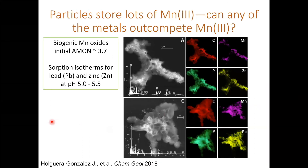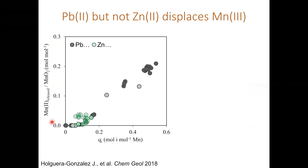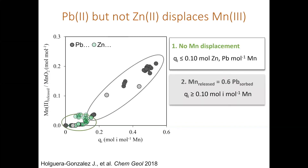We have also looked at the adsorption of metals like lead and zinc on biogenic manganese oxides. These EDX maps show the association of those metals with manganese, carbon, and phosphorus. When we look at the adsorption of these metals plotted on the x-axis, we see some release of manganese into solution. For zinc and lead, there is no release of manganese up to a surface loading of about 10%. Then for lead, as we continue to increase the loading, we see a continued increase in manganese release. We hypothesize this displacement of manganese arises from the disproportionation of Mn(III) in the layer upon the adsorption of lead.